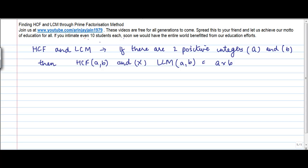Now, what does this mean? This basically means that the product of two numbers is equal to the product of their highest common factor and least common multiple, provided these two are positive integers.